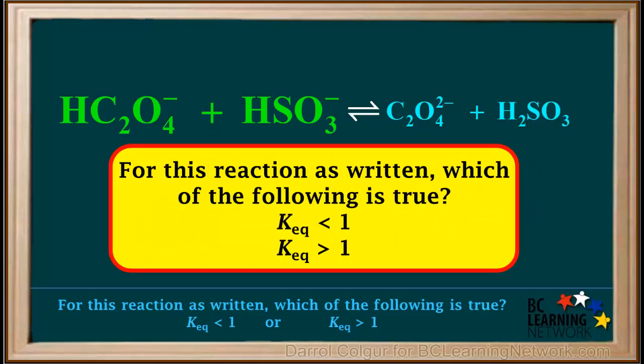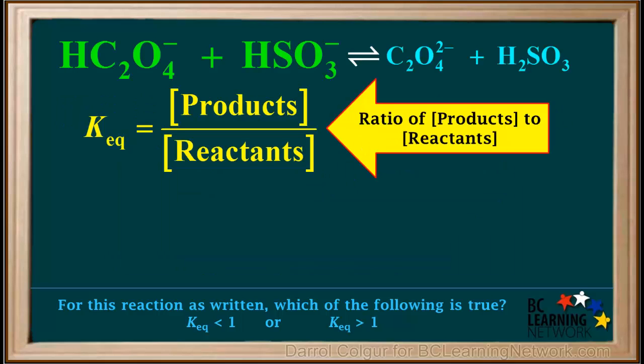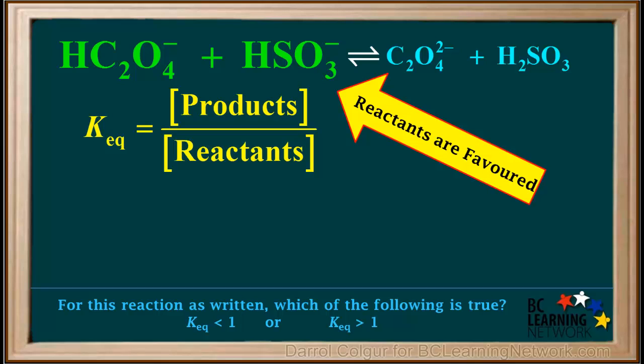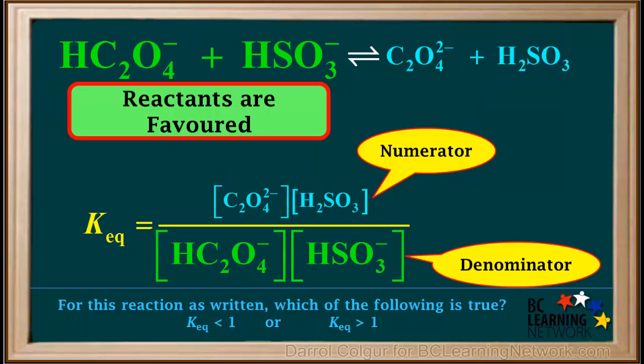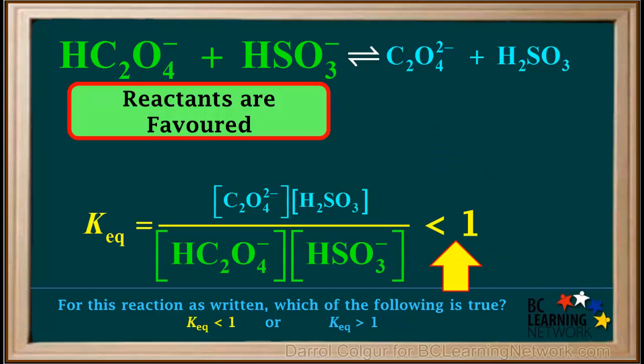The last question we're asked is whether the value of Keq for this reaction is less than 1 or greater than 1. Remember that Keq is the ratio of the concentrations of the products to the concentrations of the reactants at equilibrium. In this particular reaction, we had determined that the reactants are favored. Inserting the products and reactants into the Keq expression and knowing that the reactants are favored, we can see that the numerator is smaller than the denominator. So the value of Keq for this reaction is less than 1. So we have now answered the last question.